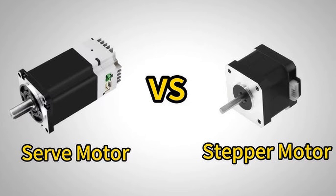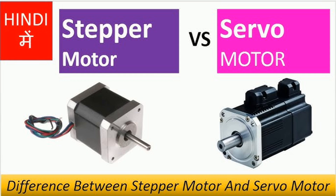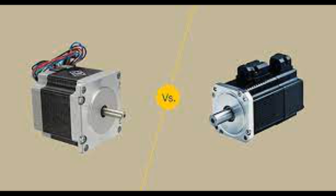Single-phase AC motors are typically used for low-power applications. Split-phase AC motors utilize two windings — main and auxiliary — to create a phase shift for starting. Once started, the auxiliary winding is usually disconnected. They are common in household appliances like washing machines and fans.